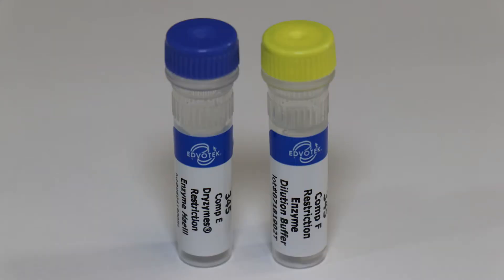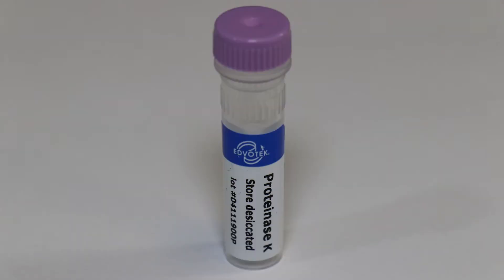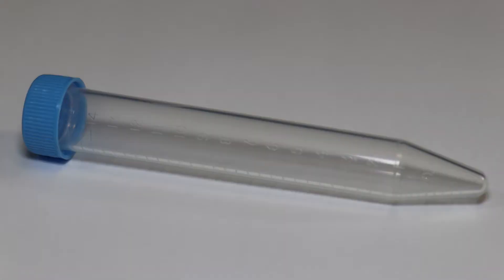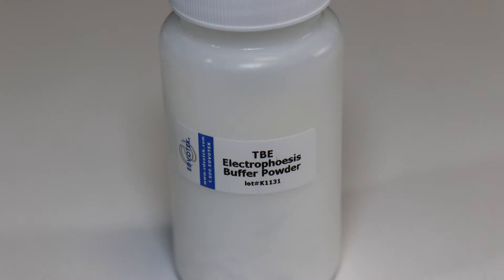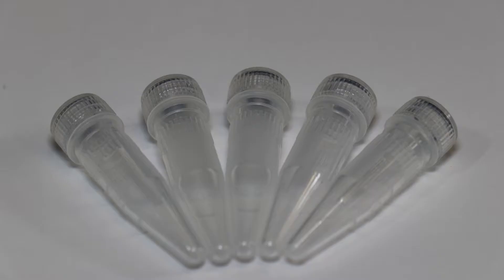Components E and F: dryzyme H3 and enzyme dilution buffer, Component G: 100 base pair DNA ladder, proteinase K, salt packets, disposable plastic cups, 15 milliliter conical tubes, TBE electrophoresis buffer powder, ultra spec agarose powder, 1.5 milliliter screw cap tubes.